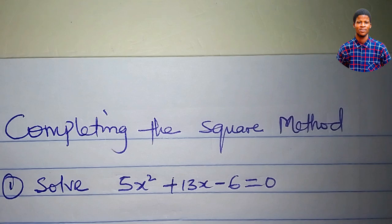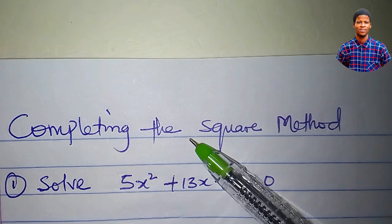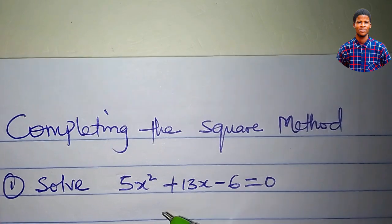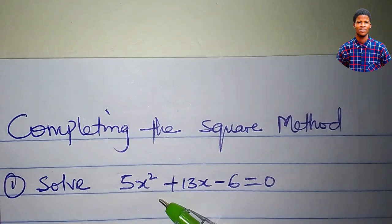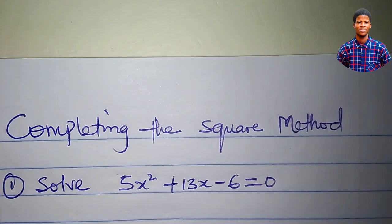In this tutorial, I'll teach you how to solve a quadratic equation using the completing the square method. The first question that we have here says: solve 5x squared plus 13x minus 6 equal to 0. Now let's solve.